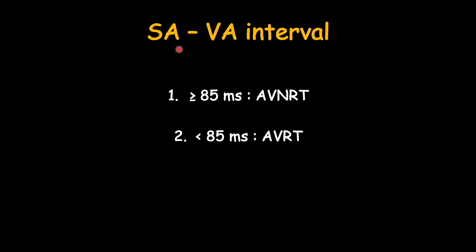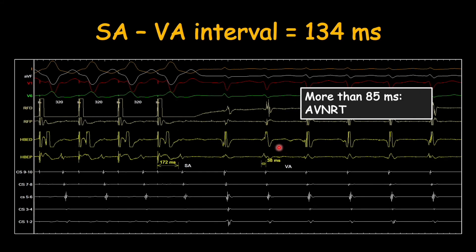Based on this difference between SA and VA we can differentiate between AVNRT and AVRT. When this difference is more than 85 milliseconds it goes in favor of AVNRT. When this difference is less than 85 milliseconds it goes in favor of AVRT. In our case the difference is 134 milliseconds — stimulus-to-A minus VA is more than 85 milliseconds, hence it goes in favor of AVNRT and excludes AVRT.